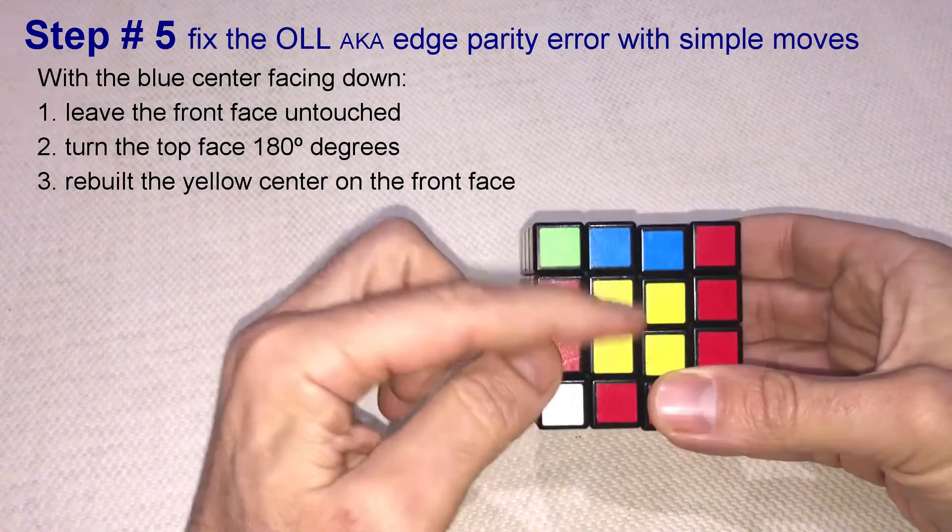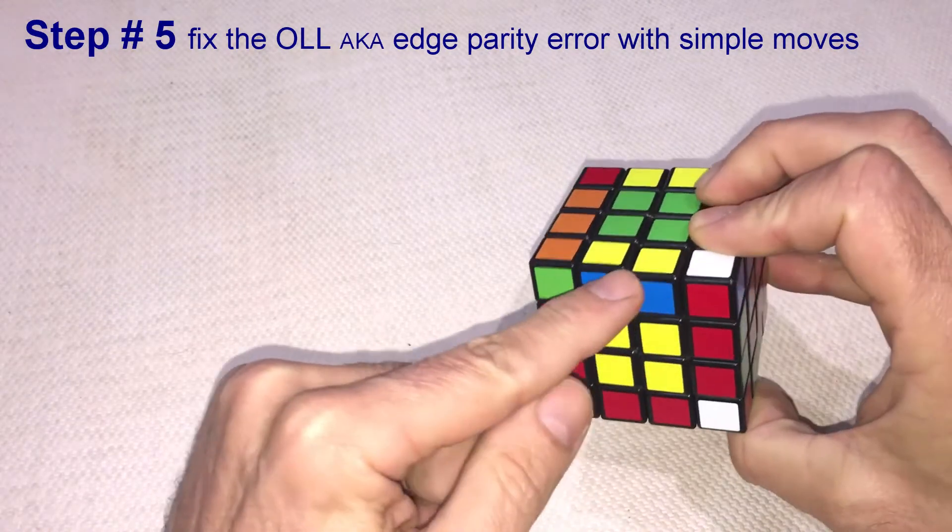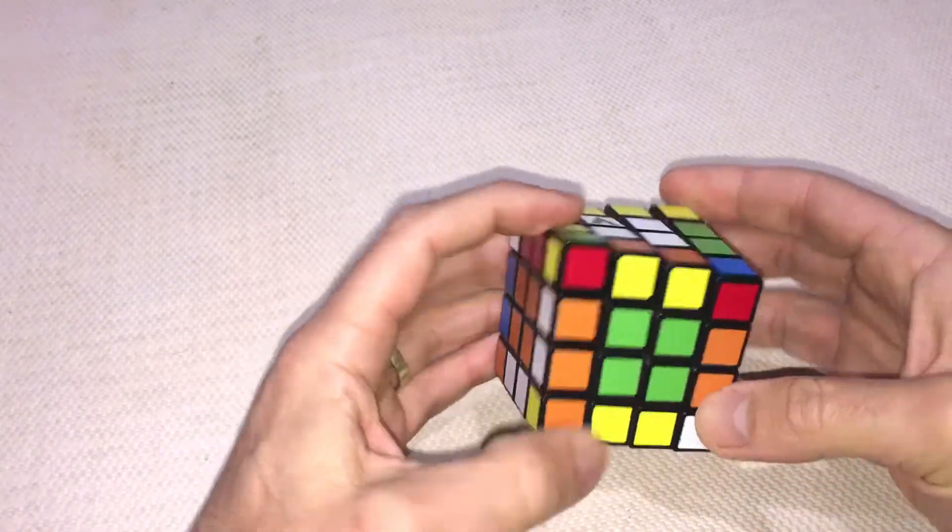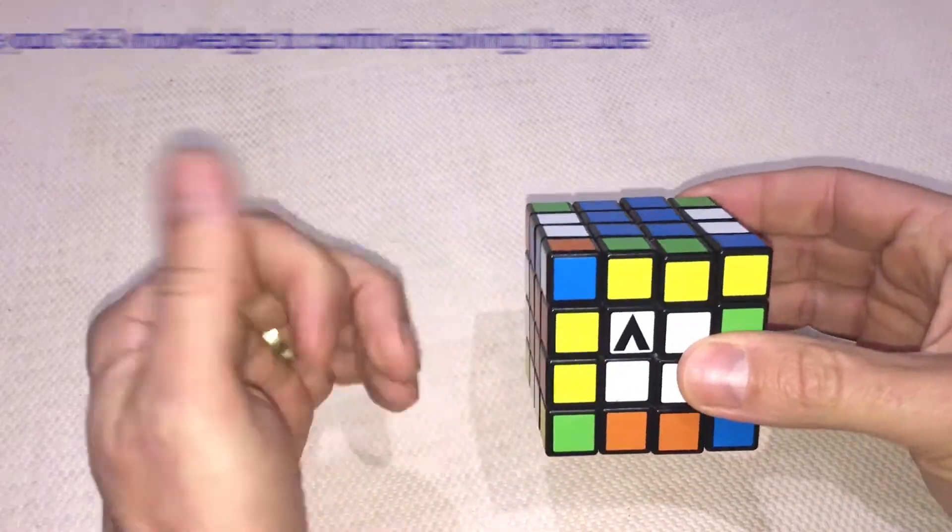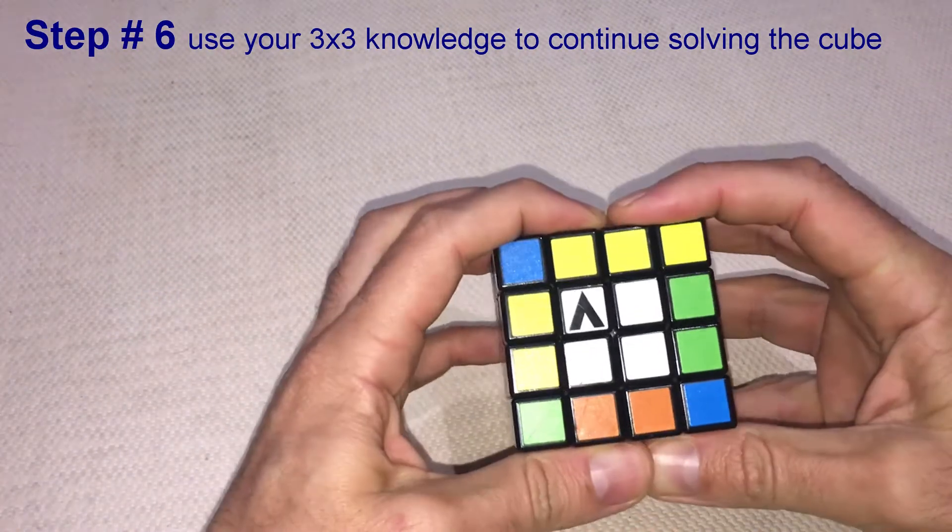And this is it. We rebuilt all the centers without breaking any edge piece. And now that we know that we are edge parity free, you can continue solving your cube using your 3x3 knowledge.